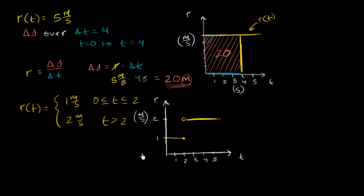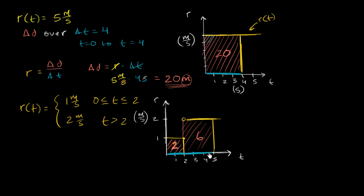What is our total change in distance over the first five seconds? We can break up the problem. Over the first two seconds, change in time is two seconds times one meter per second, giving us two meters. Then the next section: change in time is three seconds times two meters per second, giving us six meters. In both cases we're multiplying seconds times meters per second, which gives meters. So it's two plus six, or eight meters total.